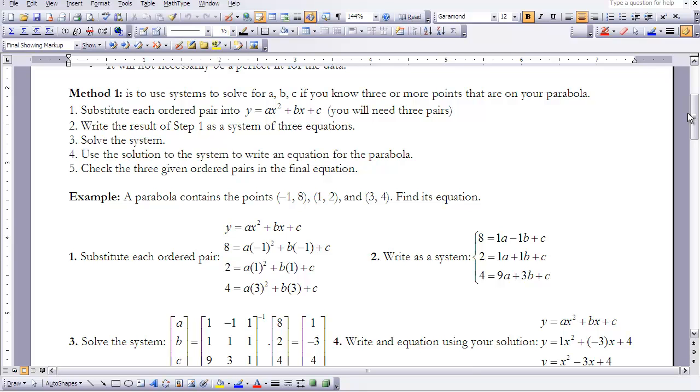So first of all, we're going to substitute each ordered pair into y equals ax squared plus bx plus c. So you need three pairs. We're going to write the result of that step one as a system of three equations. We'll solve the system. So then when we solve the system, we'll know values for a, b, and c. So we'll use the solution of the system to write an equation for our parabola. And then we can check it using our three given points.